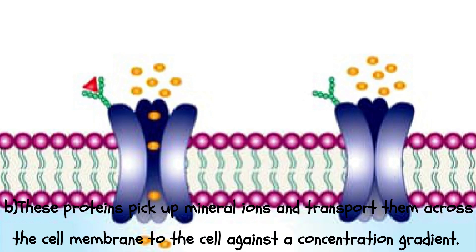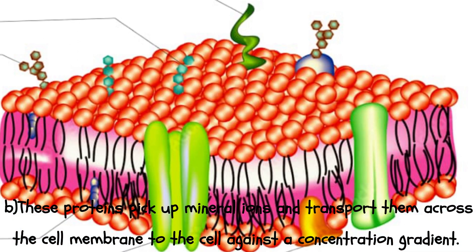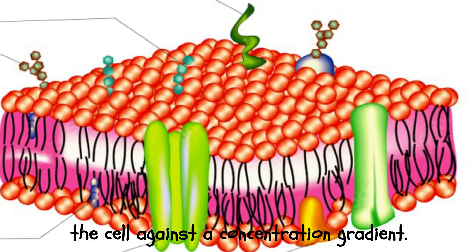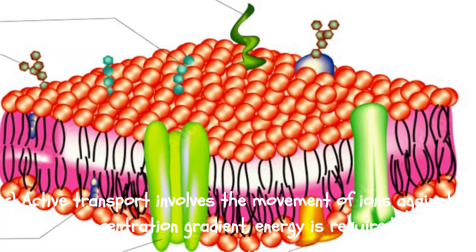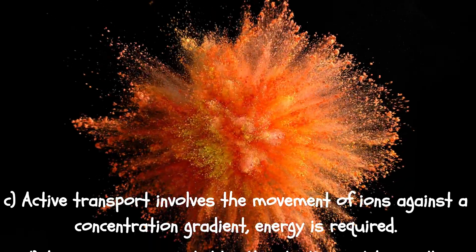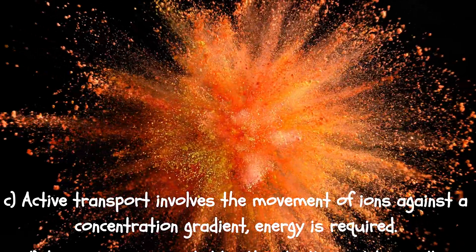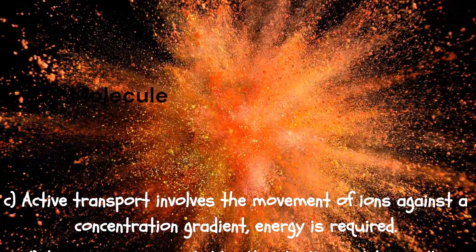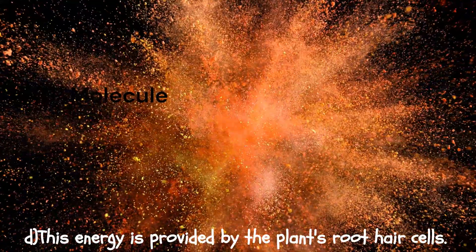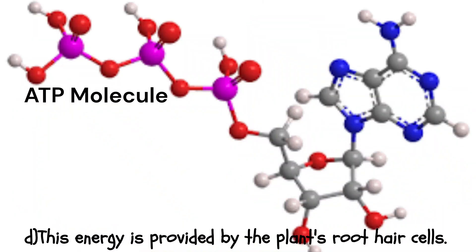b. These proteins pick up mineral ions and transport them across the cell membrane to the cell against a concentration gradient. c. Active transport involves the movement of ions against a concentration gradient. Energy is required. d. This energy is provided by the plant's root hair cells.